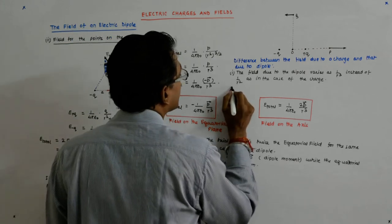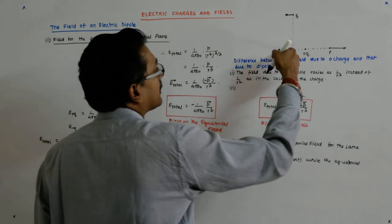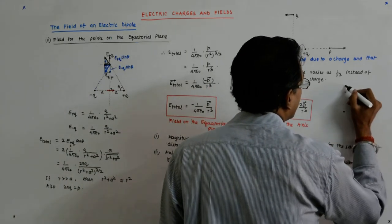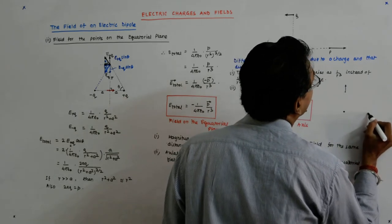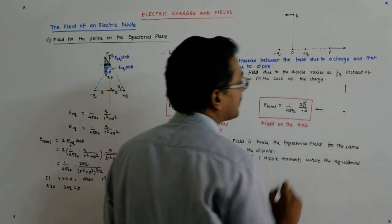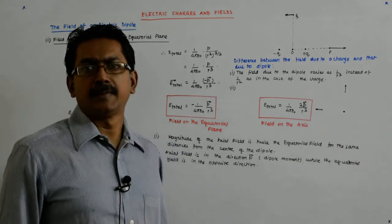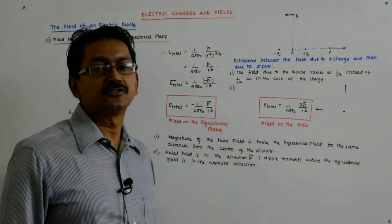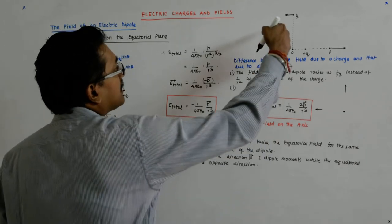Now the second thing, so in a charge if the distances were the same, so for example this was a charge here and there was a field here and there was a field here equidistant, their magnitude will be the same. Directions will of course be different, but the magnitude will be the same.